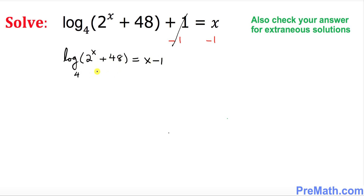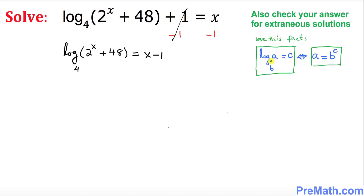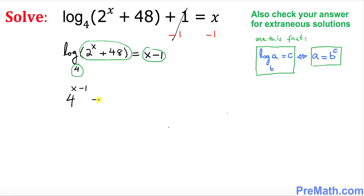This equation is in logarithmic form. To make things easier, we want to convert it into exponential form. Using the conversion rule — where B is the base, A and C are the other parts — we convert it: 4^(x−1) equals 2^x + 48.